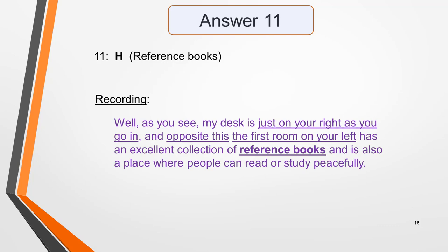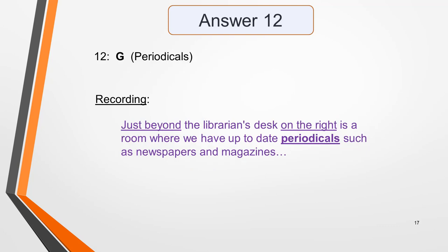Answer 12 is G — periodicals. Here's the sentence it appears in: 'Just beyond the librarian's desk, on the right, is a room where we have up-to-date periodicals, such as newspapers and magazines.' Again, there's no paraphrasing, but you do need to understand the positional and directional language.